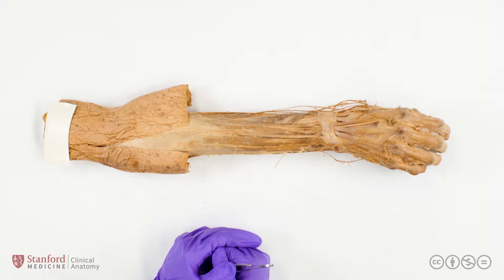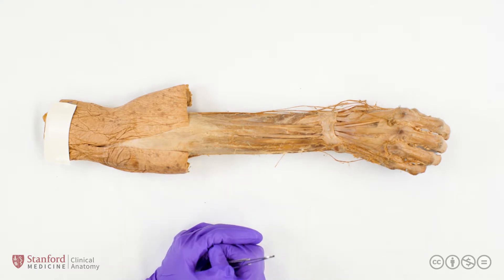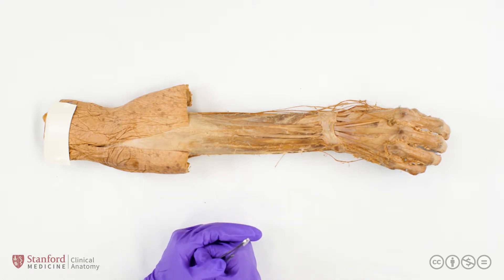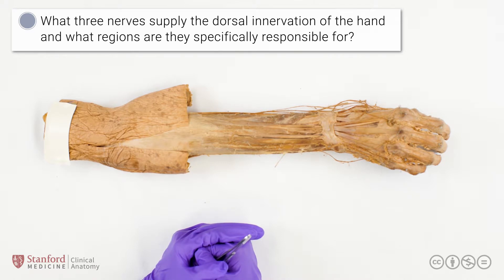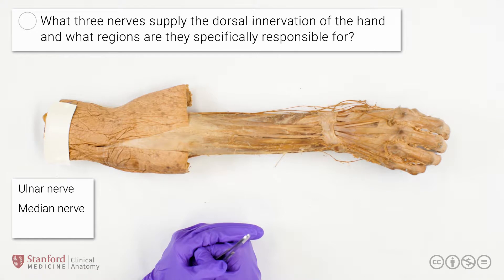Let's start by discussing the dorsal cutaneous innervation of the hand. What we mean by cutaneous innervation is innervation to the skin. While the skin has been removed here in this prosection, we will discuss dorsal innervation as if the skin were intact. What three nerves supply the dorsal innervation of the hand? The three nerves that supply the dorsal innervation of the hand are the ulnar nerve, median nerve, and radial nerve.